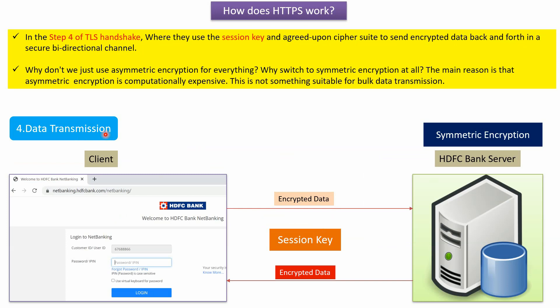Step 4 is data transmission. Both client and server now have the session key. Using this session key and the agreed-upon cipher suite, the client encrypts data and sends it to the server, and the server encrypts data and sends it to the client. This time, symmetric encryption is used, not asymmetric encryption, because asymmetric encryption is computationally expensive and not suitable for bulk data transmission. For bulk data transmission, we use symmetric encryption.